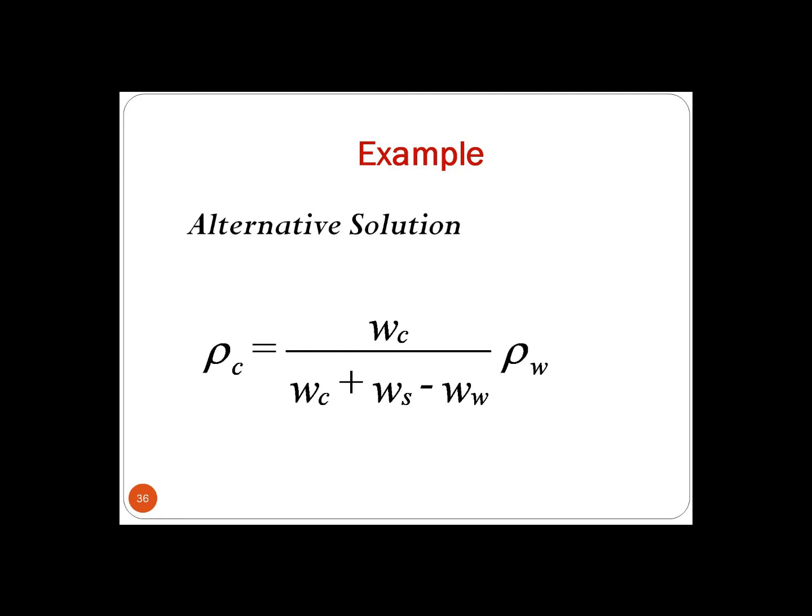In conclusion, this session covered micro-mechanical analysis of a lamina for calculating different constituents, including the burn test and acid digestion test using different acids. Going forward, we will discuss micro-mechanical analysis of a lamina for different elastic moduli. This will cover the four elastic constants for a unidirectional lamina: longitudinal Young's modulus E1, transverse Young's modulus E2, major Poisson's ratio nu12, and in-plane shear modulus G12.